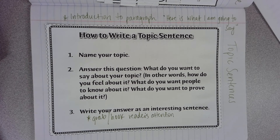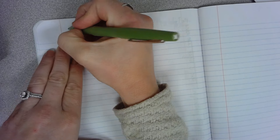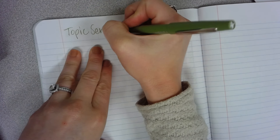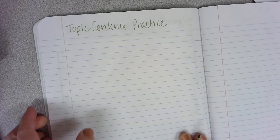Topic sentences introduce what's going to be talked about in the paragraph — otherwise saying, here's what I'm going to talk about. The next page in your composition notebook is where we're going to put the next foldable. We're going to do topic sentence practice. That's our title.